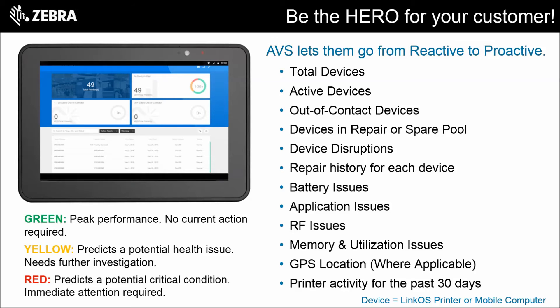The left side of the screen towards the bottom shows the predictive analysis indicators — red, green, and yellow, just like a stoplight. Red obviously means something that's more critical and needs immediate attention.